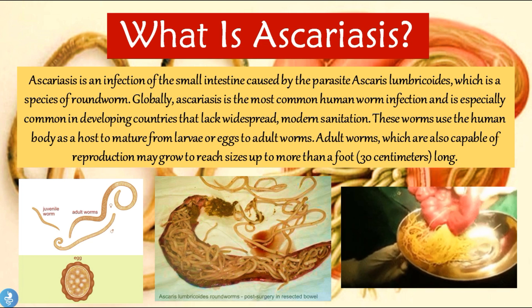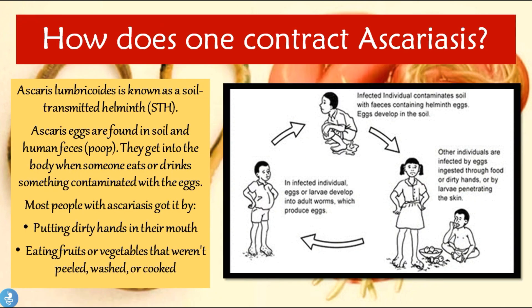Now let's look at how one can contract ascariasis. Ascaris lumbricoides is known as a soil-transmitted helminth (STH). The Ascaris eggs are found in the soil and in human feces, and they get into the body when someone eats or drinks something contaminated with eggs. Most people got it by putting dirty hands in their mouth or eating fruits and vegetables that weren't peeled, washed, or cooked. The infected individual contaminates soil with feces containing helminth eggs, and other individuals are infected by ingesting eggs through food, dirty hands, or larvae that penetrate the skin. The cycle then continues.